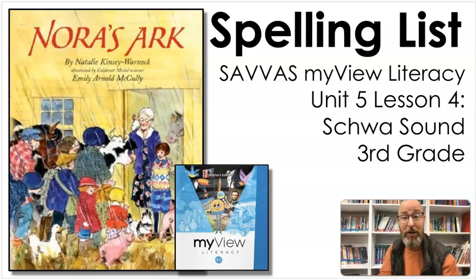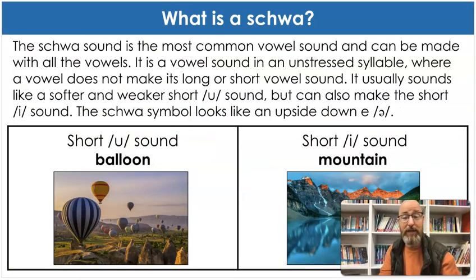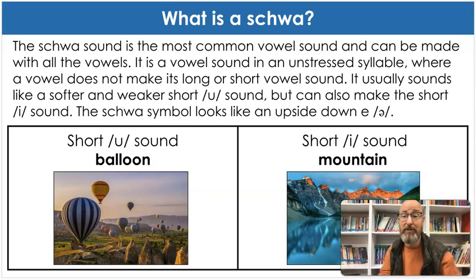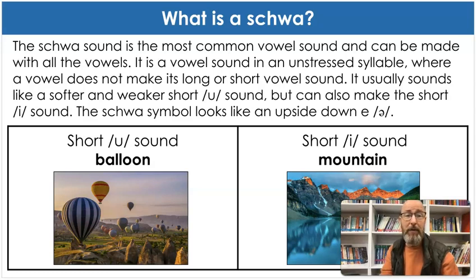I learned something about the schwa sound getting ready for this lesson. What is a schwa? You probably know what a schwa is — I'm sure your teacher has already taught you, but I want to review it because I learned something new about it. The schwa sound is the most common vowel sound — it's not the long vowels or the short vowels. It can be made with all the vowels: A, E, I, O, U can all make the schwa sound. It's a vowel sound in an unstressed syllable where a vowel does not make its long or short vowel sound. It usually sounds like a softer and weaker short U sound — we usually think of the 'uh' sound.